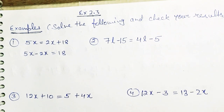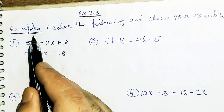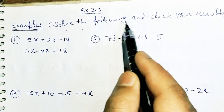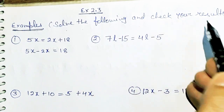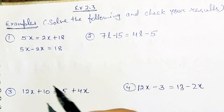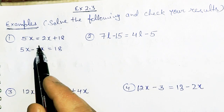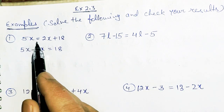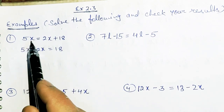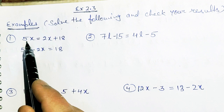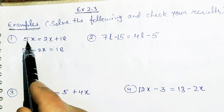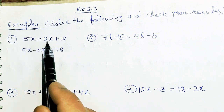So what is the question? Solve the following and check your results — you have to check your result as well. The first question is 5x equal to 2x plus 18. First you have to take like terms. 5x and 2x are both like terms.